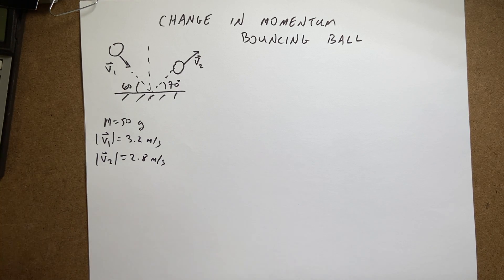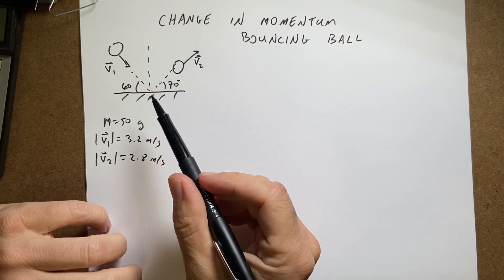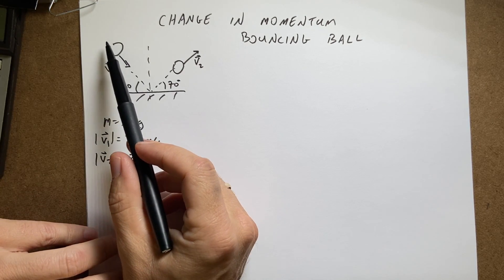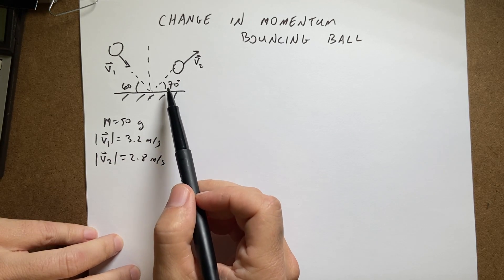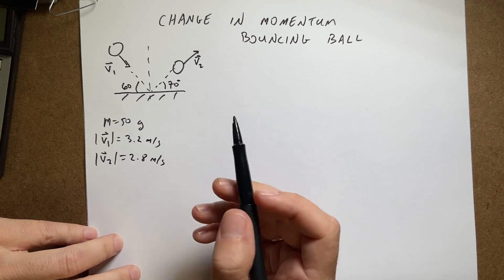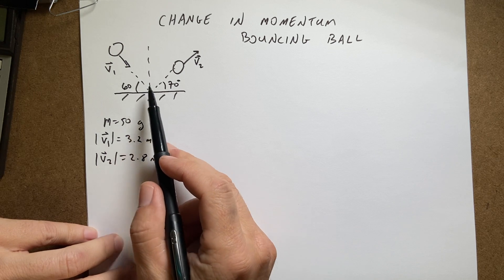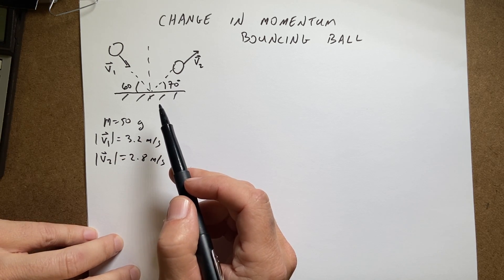Ok, so I'm going to show you how to calculate the vector change in momentum for this situation. We have a ball moving towards the ground and it bounces off at a different speed and a different angle. Normally we like to treat vectors in component form but sometimes we get it in terms of these angles. And I'm going to show you how to deal with that.